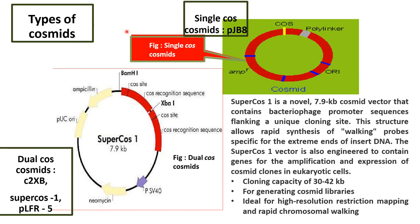There are two types of Cosmids. One is single-Cos Cosmids — an example is pJB8 — which consists of a single Cos site. The other is dual-Cos Cosmids, which consists of two Cos sites, and also has a SuperCos recognition sequence on both Cos sites.